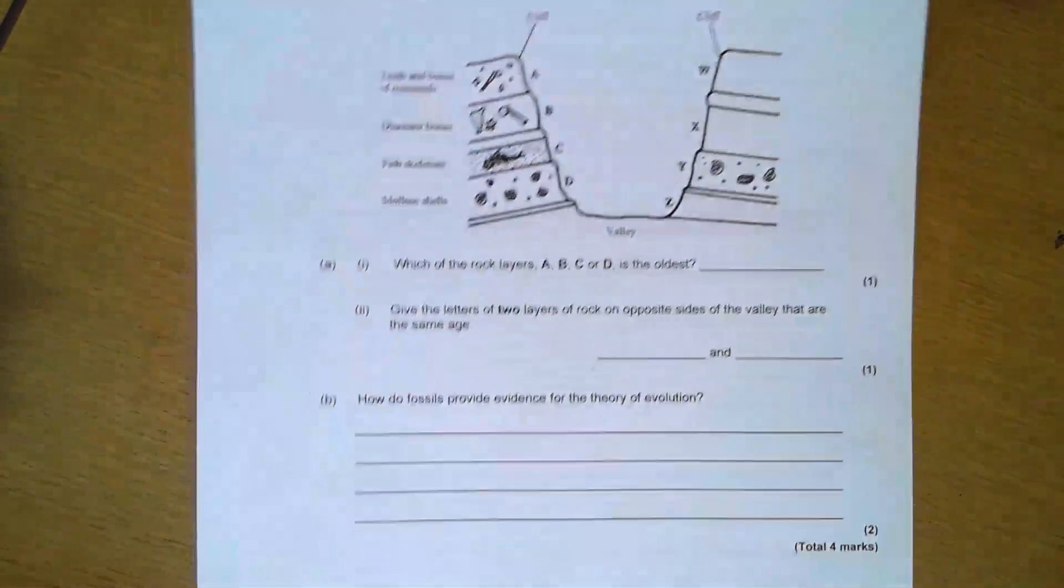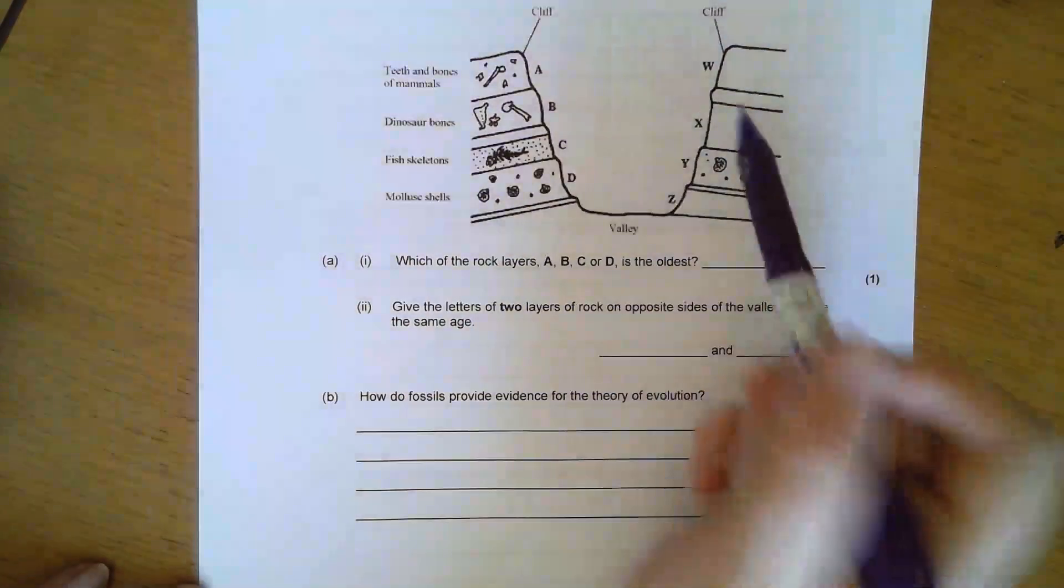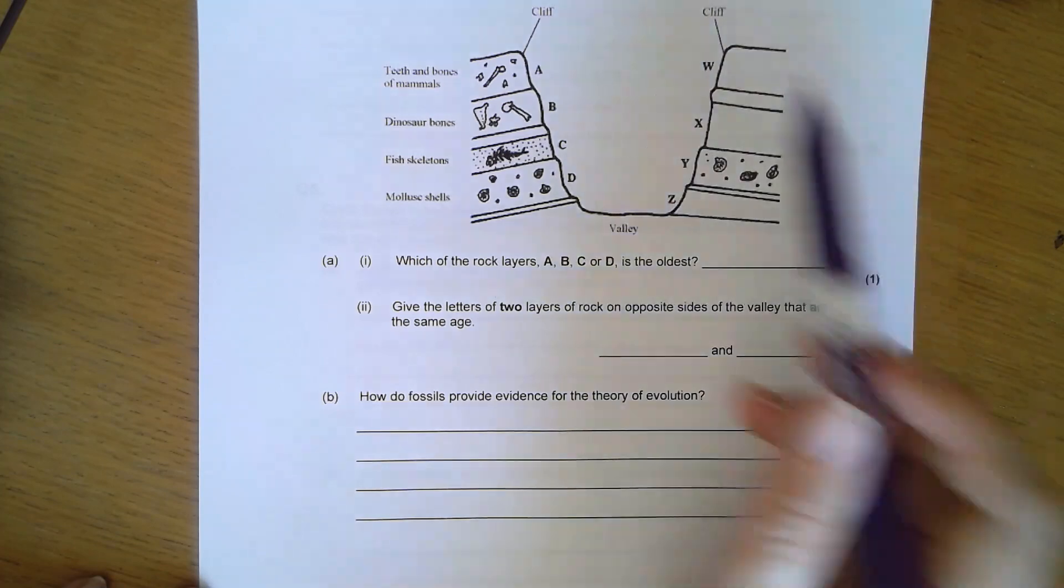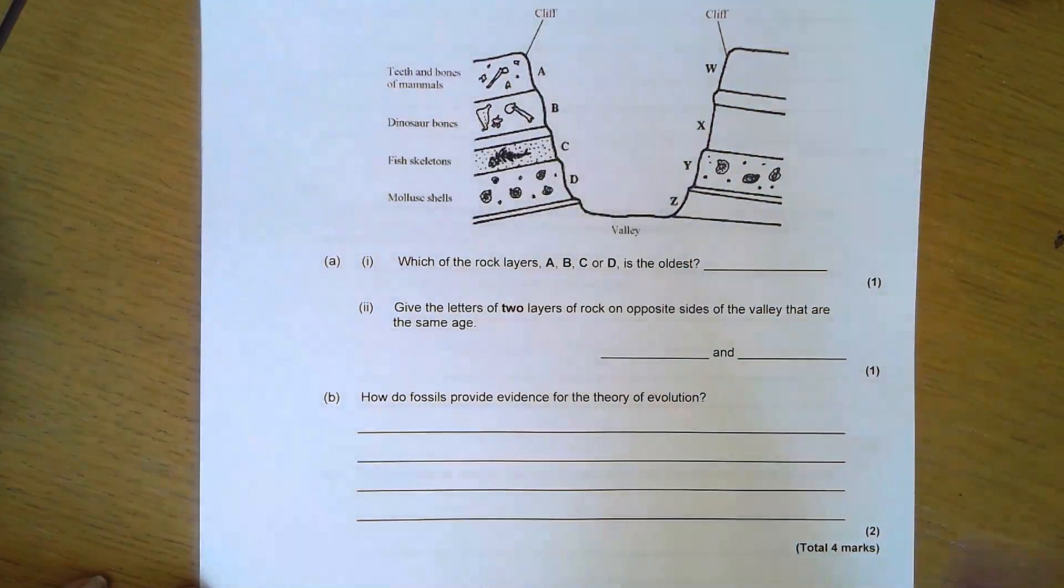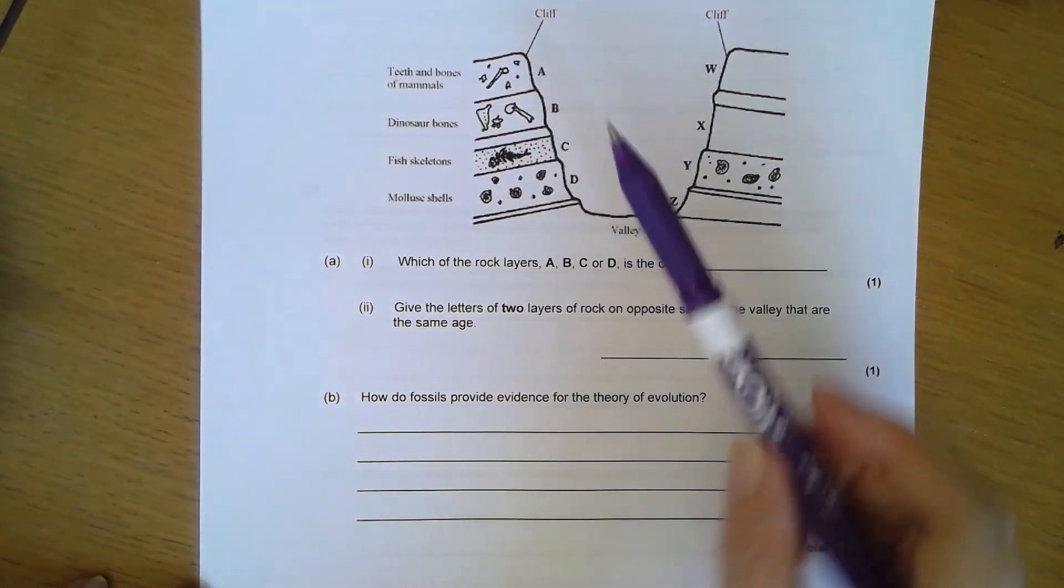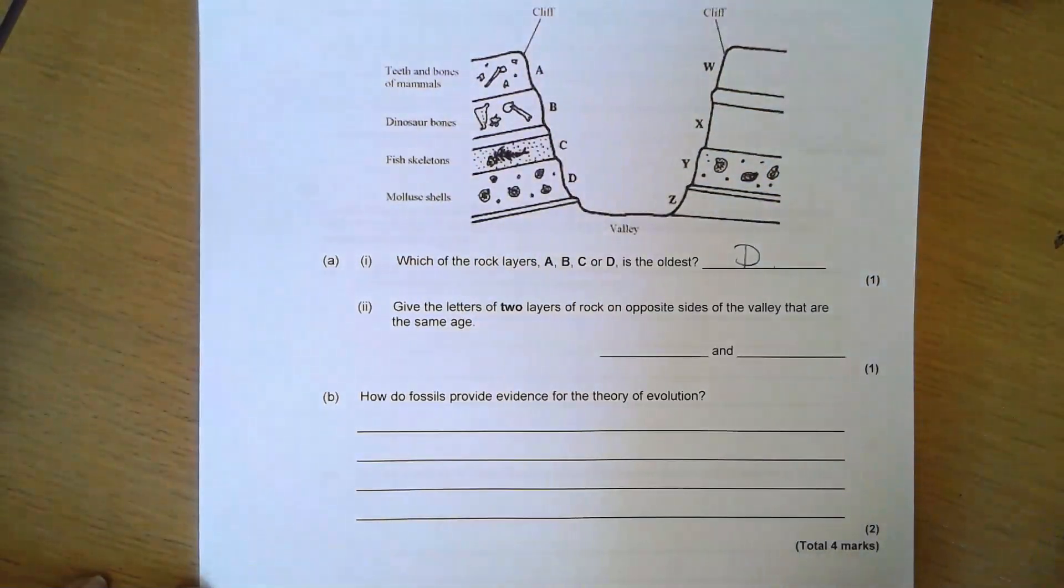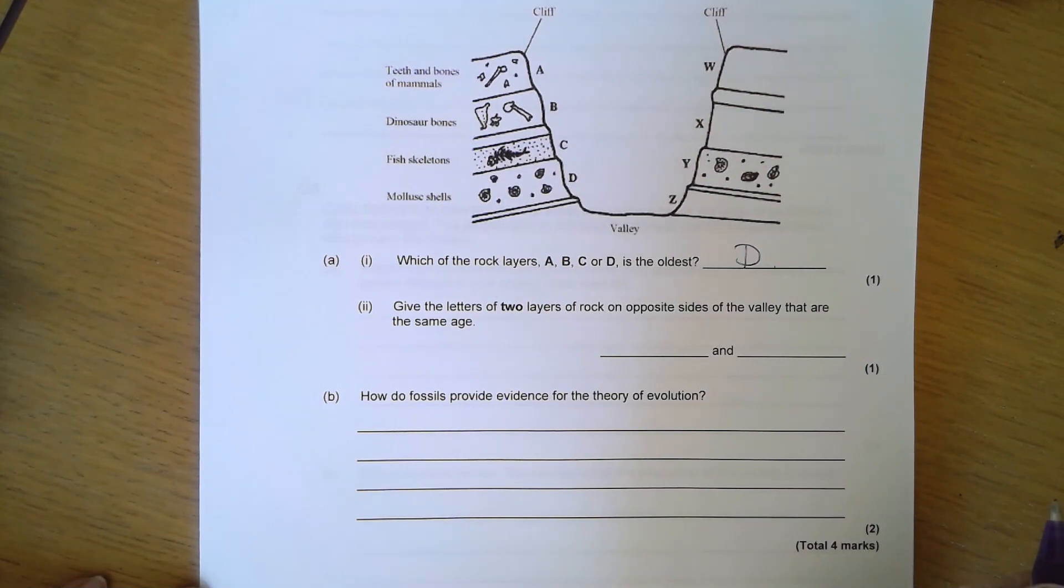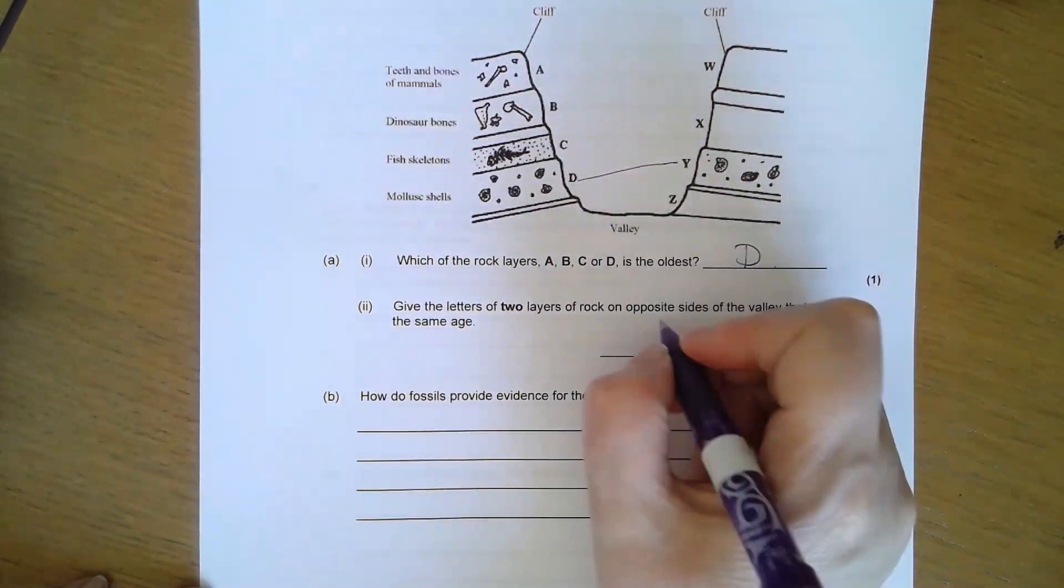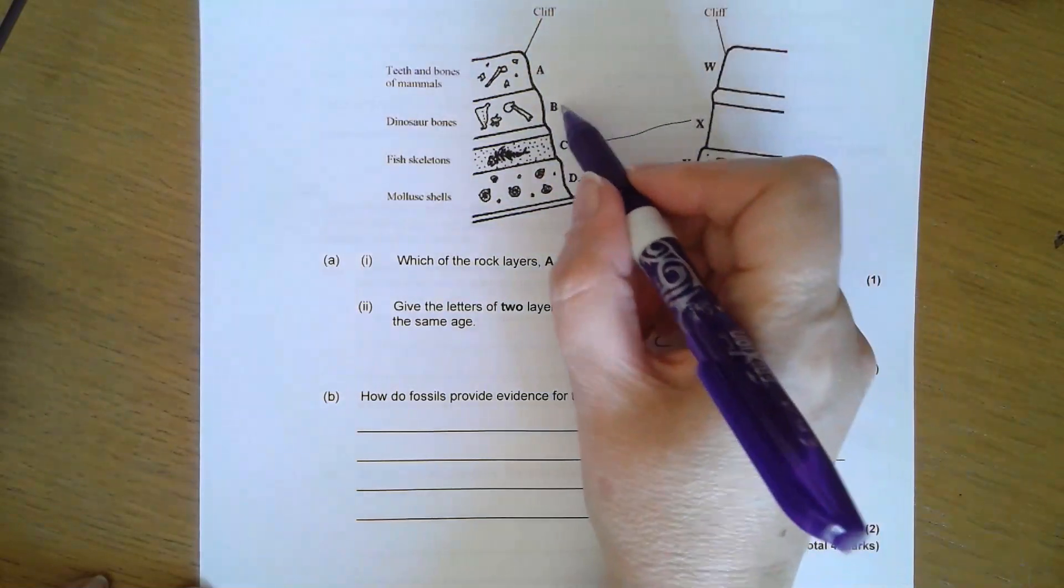Question three. I have a drawing showing some fossils found in layers of rocks on two cliffs on opposite sides of a valley. Geologists think the valley's been carved out by a river. Which of the rock layers A, B, C, or D is the oldest? Layers form on top of one another, so D, the furthest down in the valley, is the oldest layer of rock.